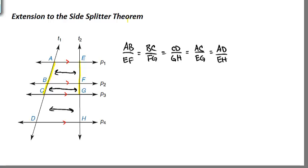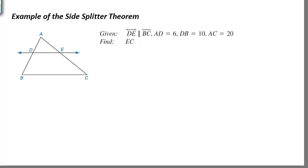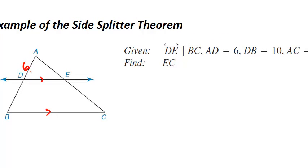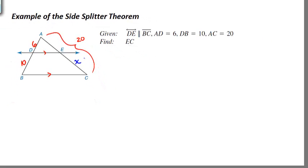Let's look at how to use these in some actual problems. We take a look at this problem, very straightforward. It tells us that DE is parallel to BC. It tells us that AD has a length of 6, that DB has a length of 10, that AC, so the whole side, has a length of 20. And what we're looking for is the length of EC. So let's go ahead and call that X, so when we solve for X we are finished with the problem here. Let's go ahead and set up a proportion. Looking at our side splitter theorem, we have the choice. We could do AD to DB, so top to bottom on the left side, equal to AE over EC, top to bottom on the right side.